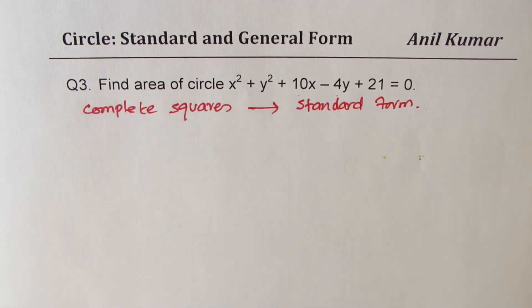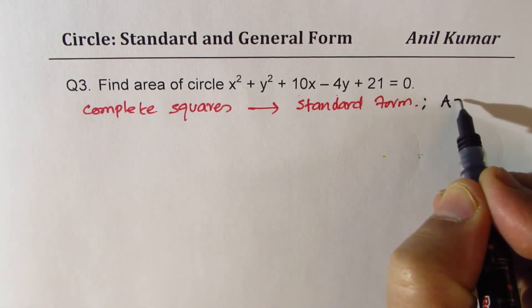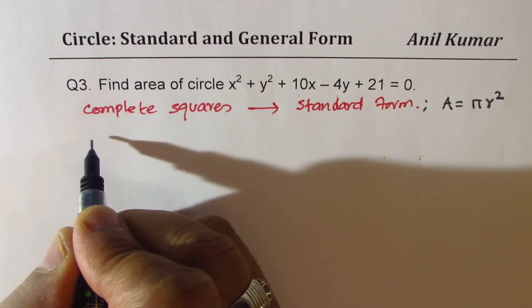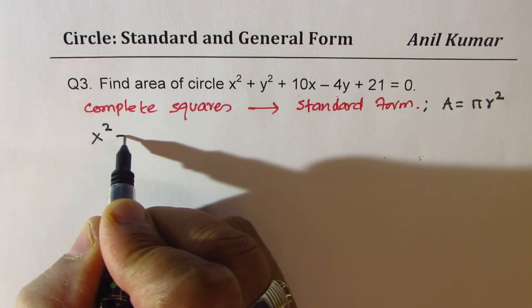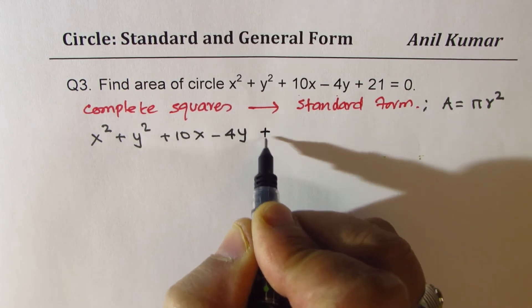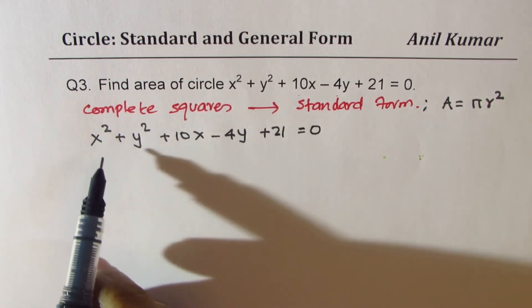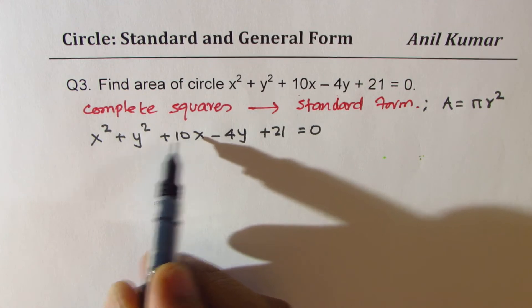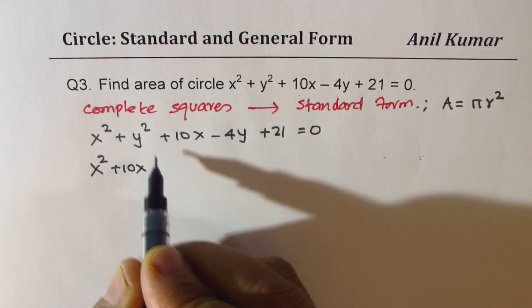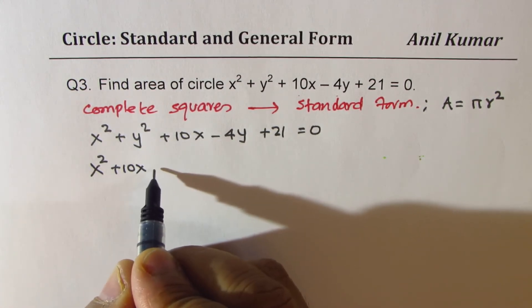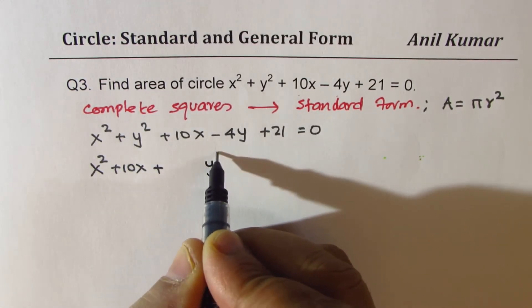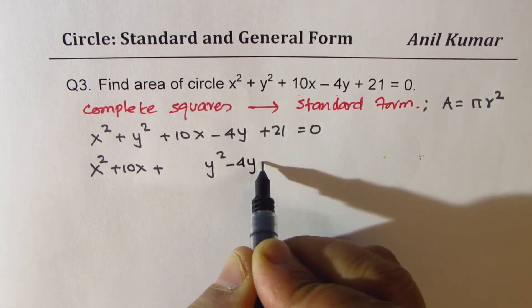In many test papers, that is the type of question which you expect from this unit on circles. So let us see how to complete the squares and write this equation in standard form. And then, of course, we can find the area. We know area is πr². So the idea is to get the radius. So let's begin with the equation, which is x² + y² + 10x - 4y + 21 = 0. Now let's collect all the terms with x. So we have x² + 10x and also the terms with y - y² - 4y plus something.